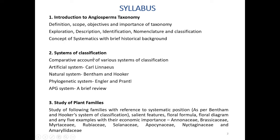Our second topic is Systems of Classification. Under that we have to study a comparative account of various systems of classification: the Artificial system by Carolus Linnaeus, the Natural system by Bentham and Hooker, the Phylogenetic system by Engler and Prantl, and the APG system by brief review.